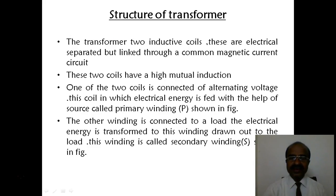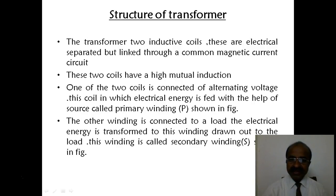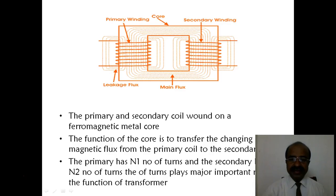Structure of transformer. The transformer has two inductive coils. These are electrically separated but linked through a common magnetic circuit. These two coils have high mutual induction. One of the two coils is connected to the alternating voltage — this coil is known as the primary winding. The other winding is connected to the load, and that is known as the secondary winding, as shown in the figure.